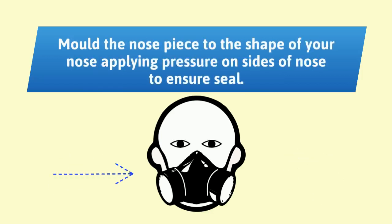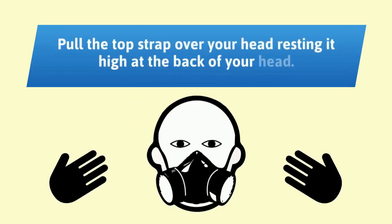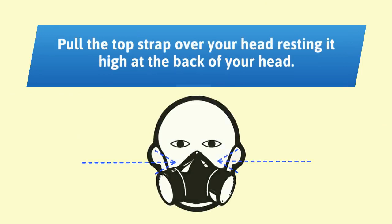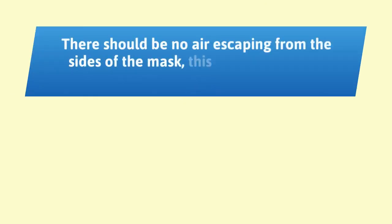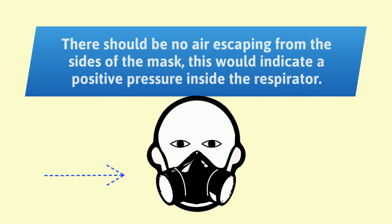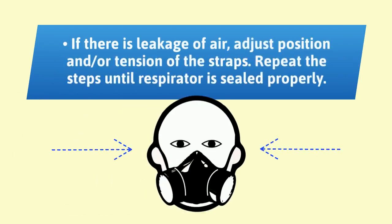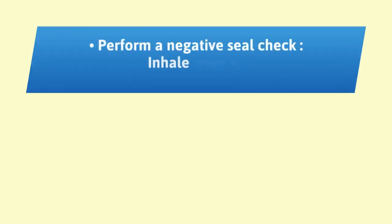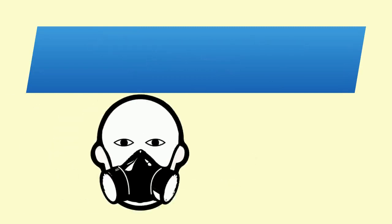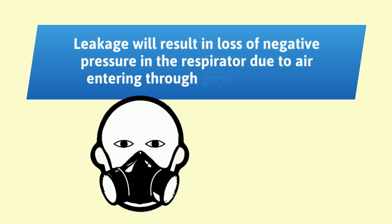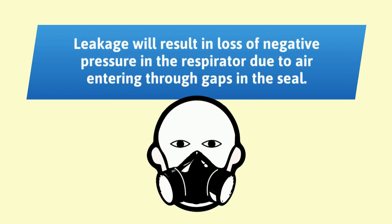Place the fingertips of both hands at the top of the metal nose piece; mold the nose piece using two fingers on each hand to the shape of your nose, applying pressure on the sides to ensure a seal. For a positive seal check, press your hands at the top and side of your face without touching the mask, then exhale sharply — there should be no air escaping from the sides, indicating positive pressure inside the respirator. If there is air leakage, adjust position and tension of the straps and repeat until the respirator is sealed. For a negative seal check, inhale deeply — negative pressure should make the respirator cling to your face. Leakage will result in loss of negative pressure due to air entering through gaps in the seal.